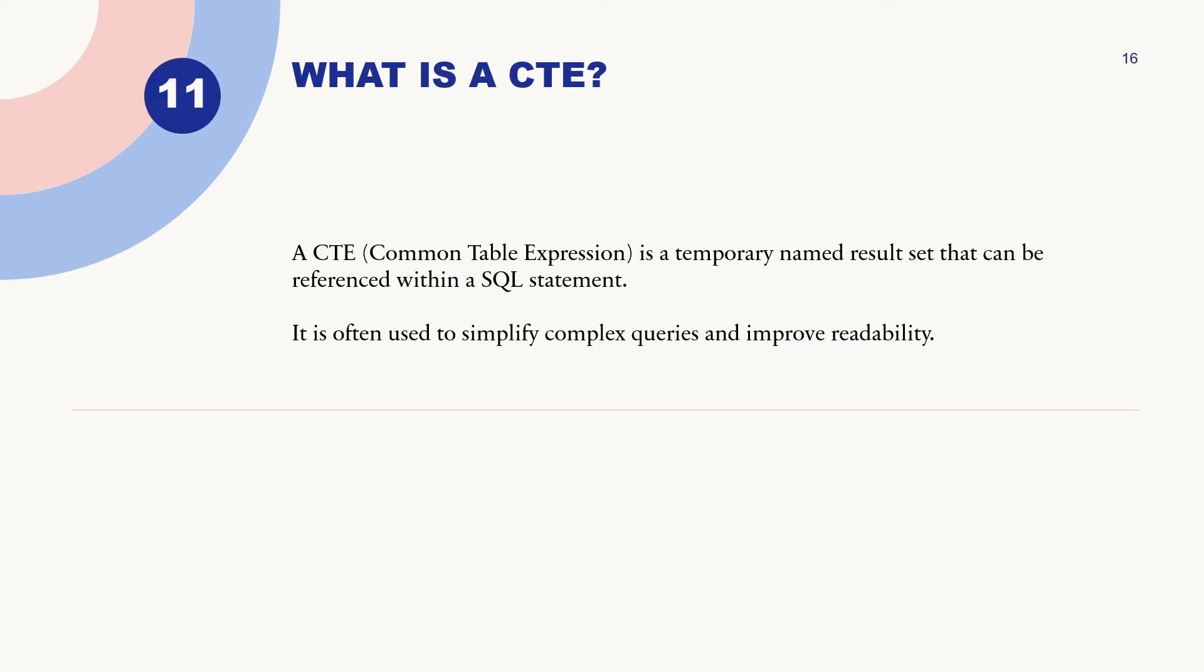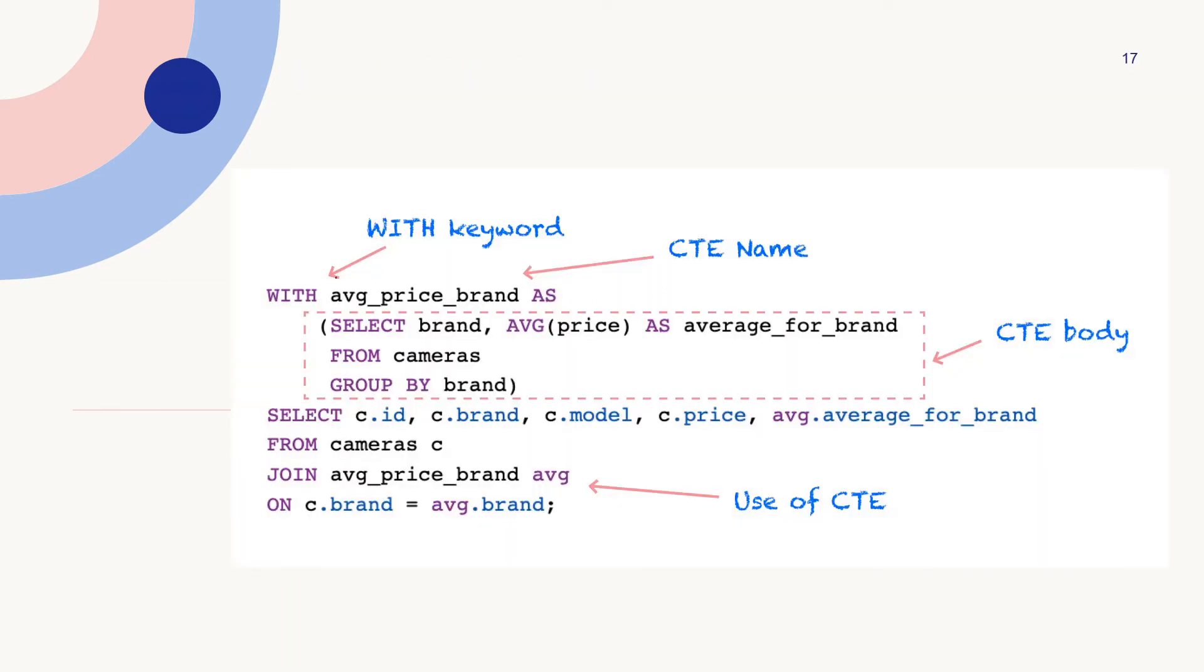What is CTE? CTE is a Common Table Expression, a temporary named result set that can be referenced within an SQL statement. It is often used to simplify complex queries and improve readability. CTE starts with the WITH keyword, followed by the CTE name, then AS and the main content of the CTE. Then we can select from and join the CTE table. This is the best example for CTE. We'll talk more about this in the practical session.